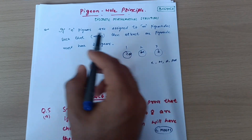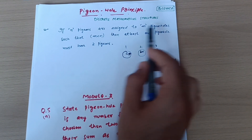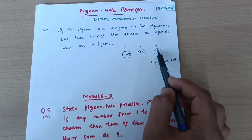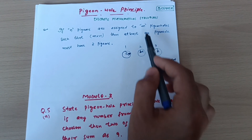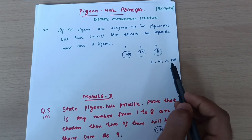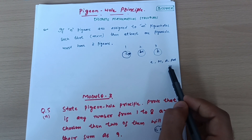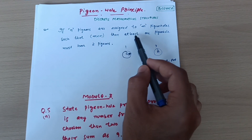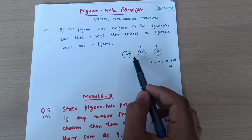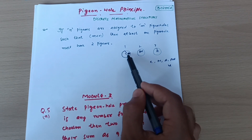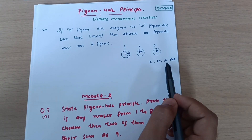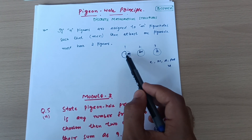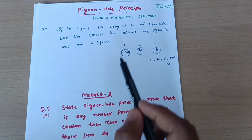This is the principle: if n pigeons are assigned to m pigeonholes such that m is less than n — we have 3 classrooms and 4 students, so m is less than n — then at least one pigeonhole must have two pigeons. One classroom ends up with two students, which is what we see here. That is the Pigeonhole Principle. Hope it is clear.